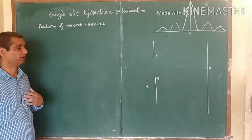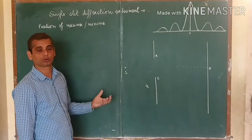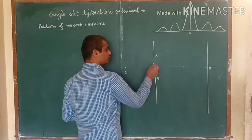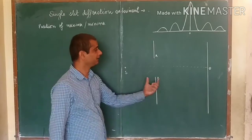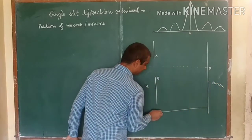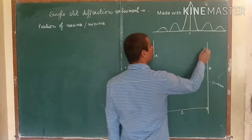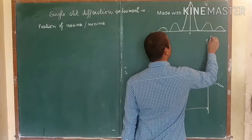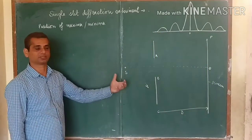We have the position of maxima and minima. This is a source emitting monochromatic light. The light emerges from the source and passes through a slit of size 'a'. A screen is placed at a distance capital D. We want to find out the position of maxima or minima on this screen. Point P is a point where we will apply the condition of maxima or minima.